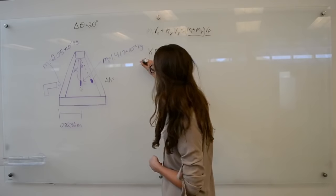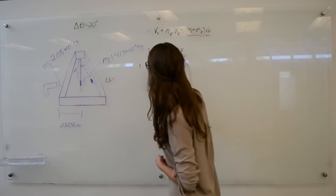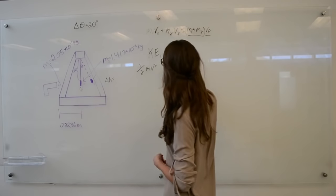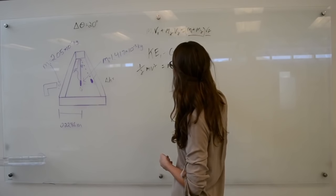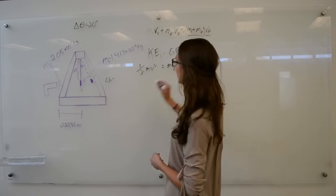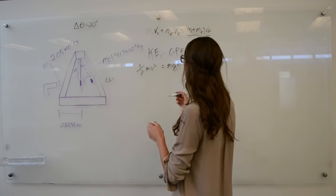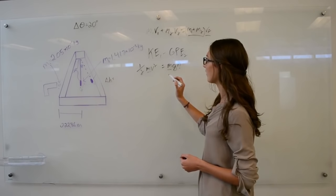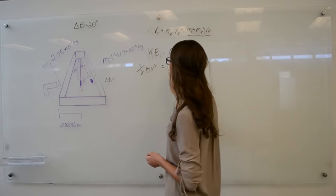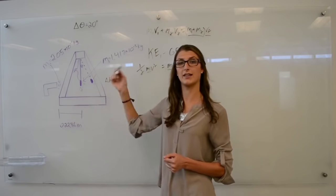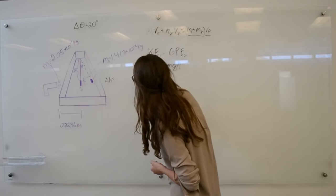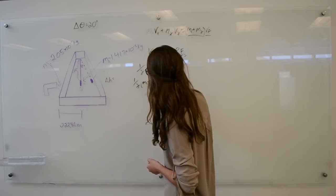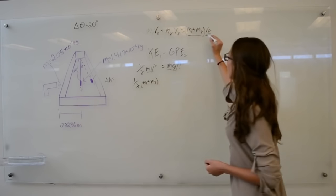We know that one half MV squared equals Mgh. This is the delta H that it moves up. However, we know that the M's here are going to be the same. They're going to be the mass of the bullet and the clay together. So that's equal to one half M1 plus M2, and this is the final velocity that we use here.